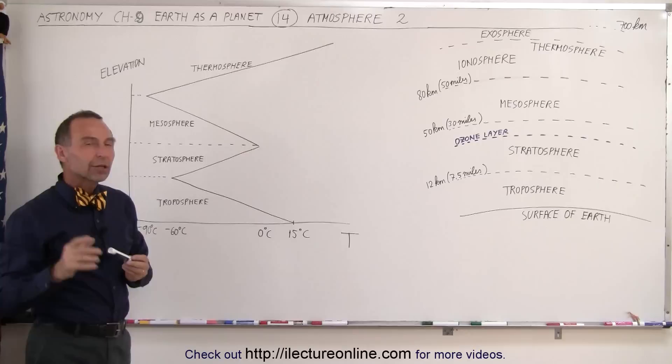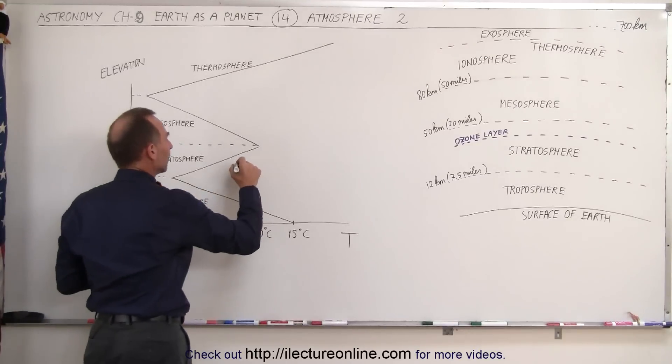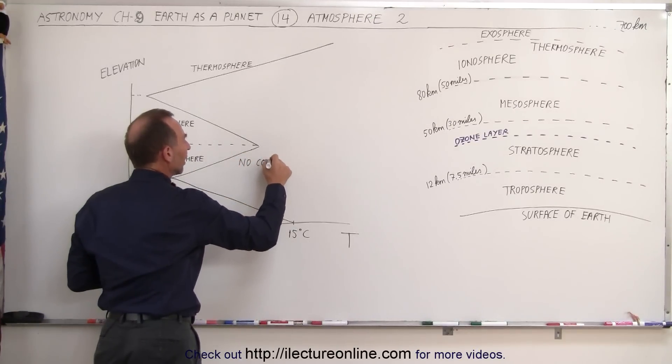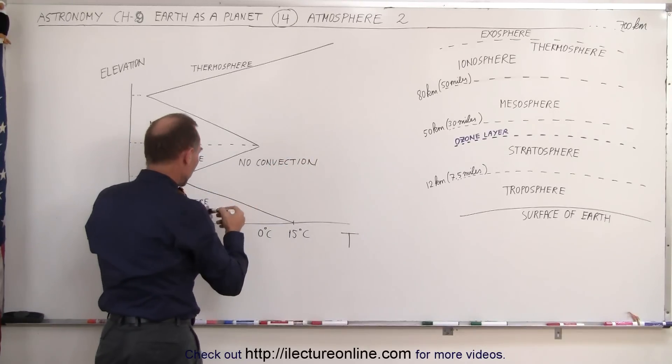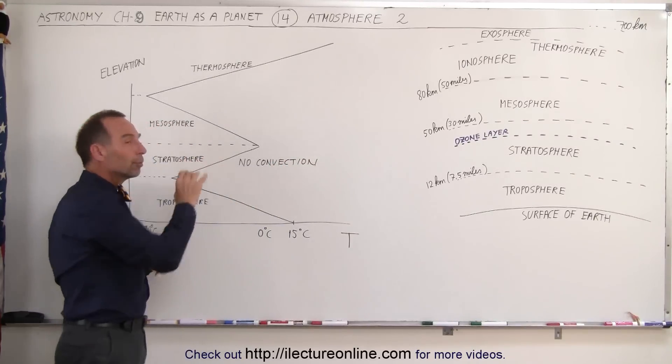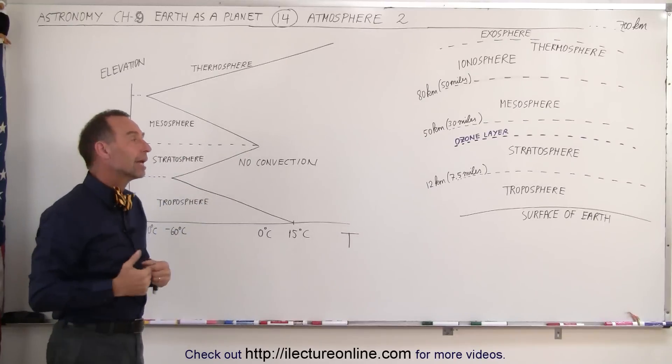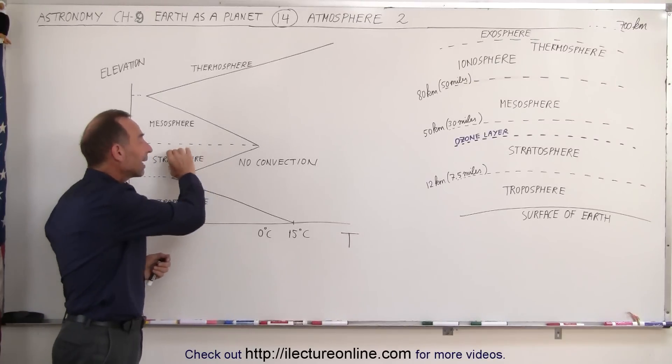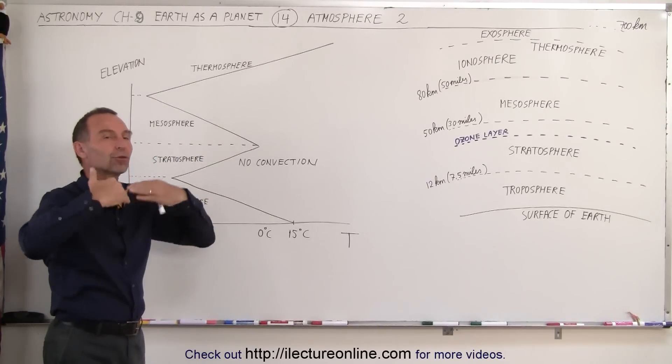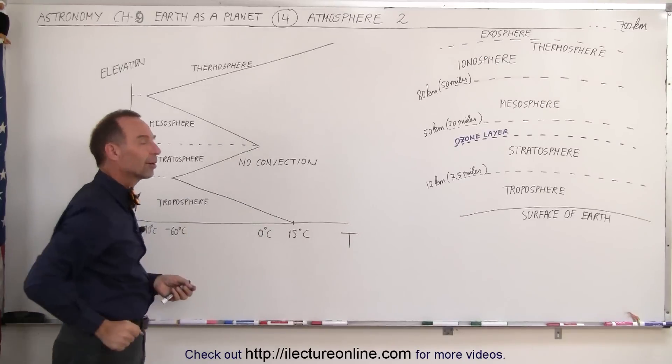There's very little convection currents. So basically, we can say no convection currents, and since there's no convection in that region of the atmosphere, whatever heat gets absorbed due to the incoming UV radiation that gets absorbed by the ozone layer then heats up that layer and that heat then stays there enough for the temperature to reach as much as 0 degrees centigrade.